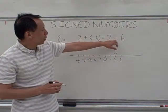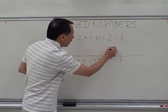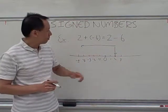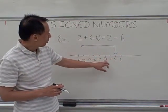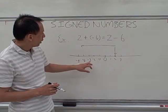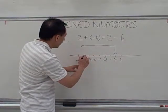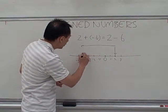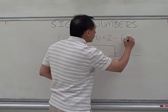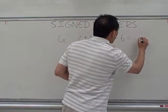And because this is a minus 6, I move to the left-hand side by 6 units. Let's count them. 1, 2, 3, 4, 5, and 6. And I will end up being here. And that should be the answer. Therefore, the answer is negative 4.